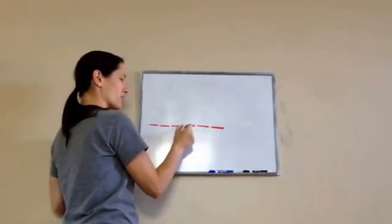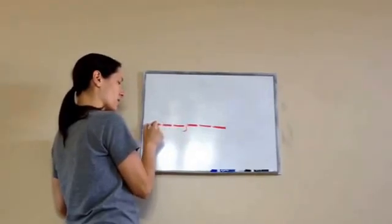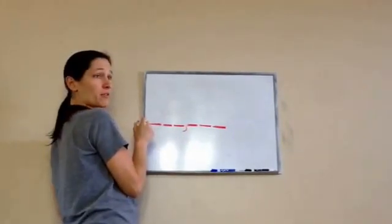Ones, tens, hundreds, comma, thousands, ten thousands, hundred thousands, comma, what was that? One million?